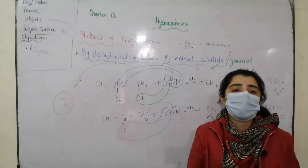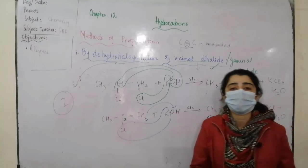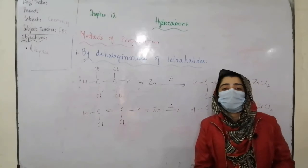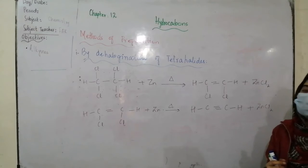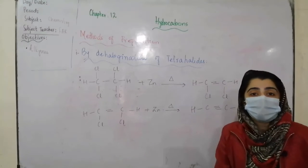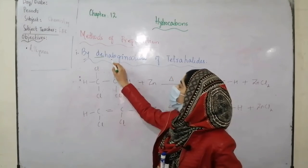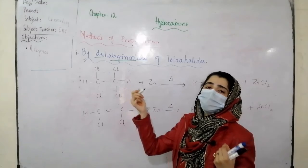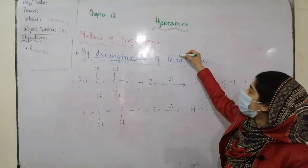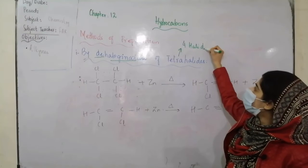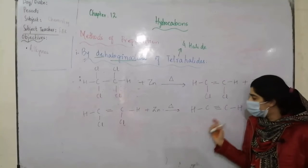Now we go to the second method of preparation: dehalogenation of tetrahalides. If you have a tetrahalide — an alkyl halide with four halogen atoms — and you dehalogenate it using zinc dust along with heat, it will lead to the formation of an alkyne.